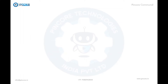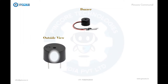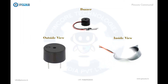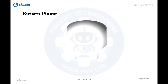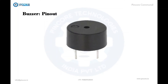A buzzer is actually an audio signaling device which is integrated with electronic transducers. Now coming to the physical view of a buzzer — as you can see, this is how a buzzer looks from the outside. Coming to the inside view, the buzzer consists of a piezo element, which we will talk about later.